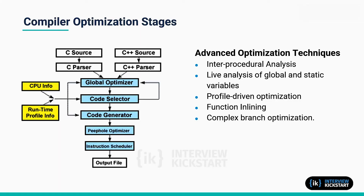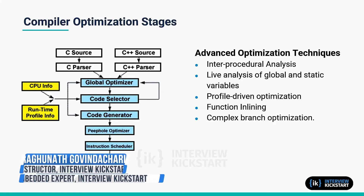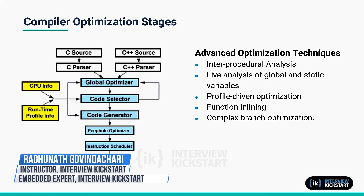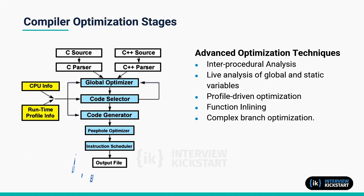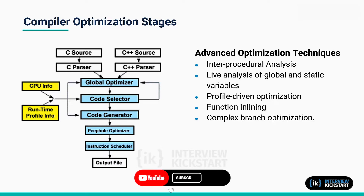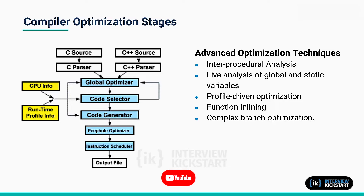A compiler does its optimization in multiple stages. There are two parts to the compiler: the front-end and the back-end. The front-end deals with the lexical analysis and syntactic analysis of the code, and then the back-end is involved in the code generation.